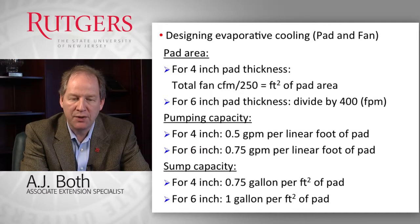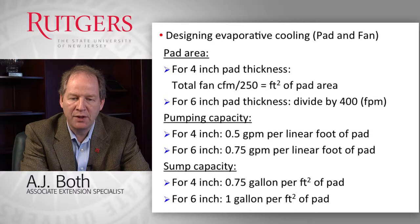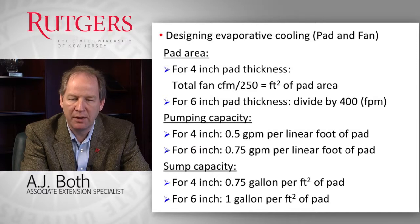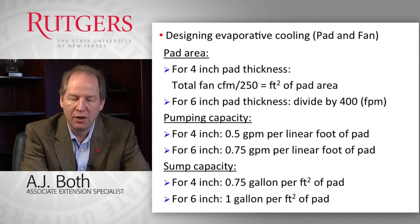The pumping capacity required also depends on pad thickness. For the four-inch pad, you need 0.5 gallons per minute per linear foot of pad. For the six-inch pad, you need 0.75 gallons per minute per linear foot of pad material. The sump or tank capacity likewise depends on pad thickness: three-quarters of a gallon per square foot of pad area for the four-inch pad, and one gallon per square foot of pad area for the six-inch pad.